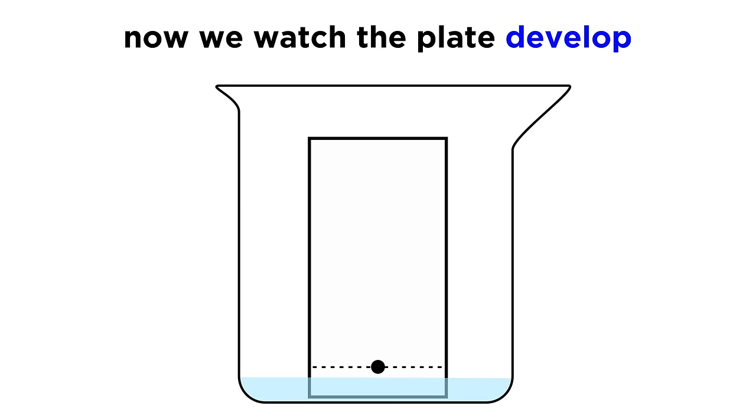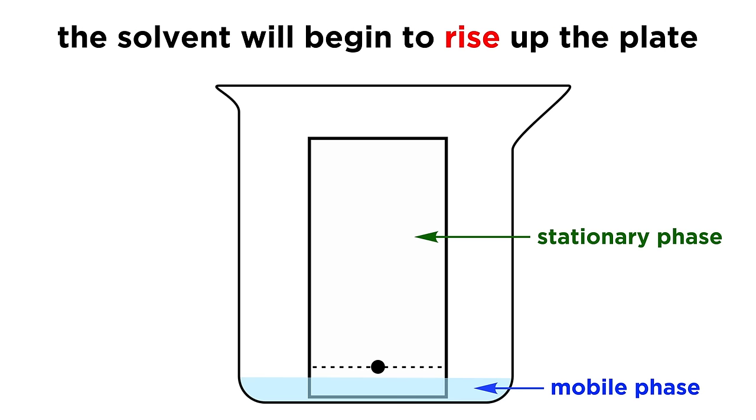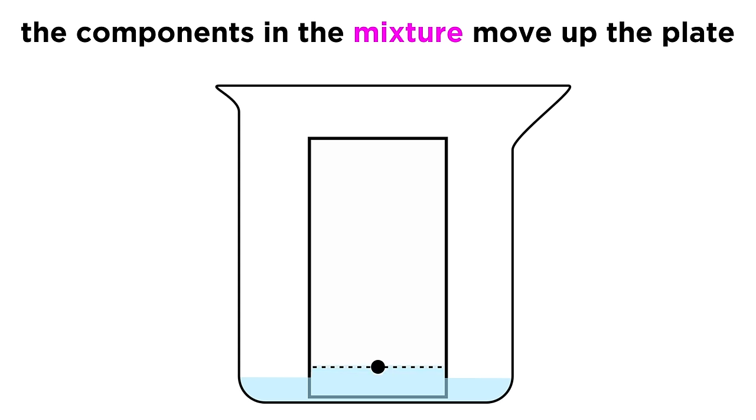Now cover the beaker with something so that solvent will not evaporate, and we can watch the plate develop. The solvent, which we call the mobile phase, will begin to rise up the plate, which we call the stationary phase. It does this by capillary action, just like we saw with the capillary tubes, and once it hits the sample, it will drag those components up with it.